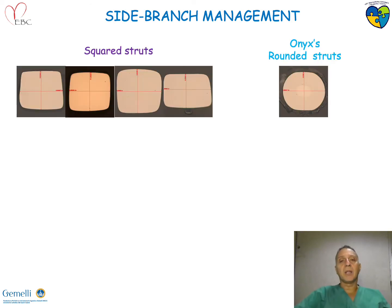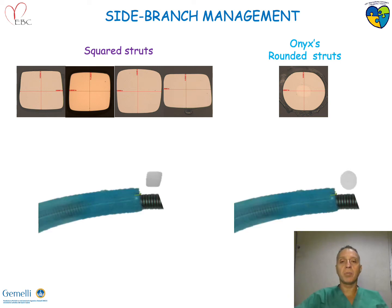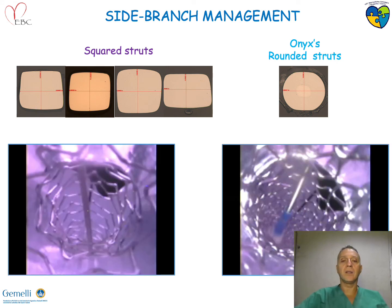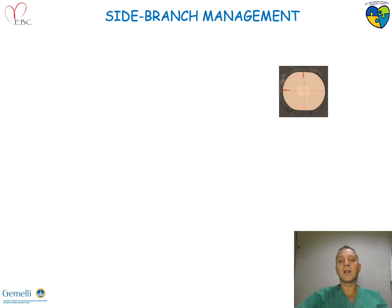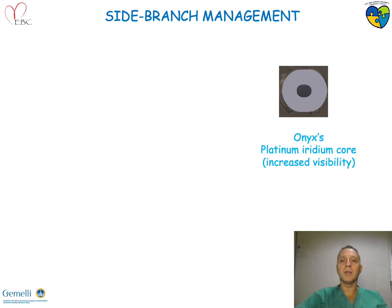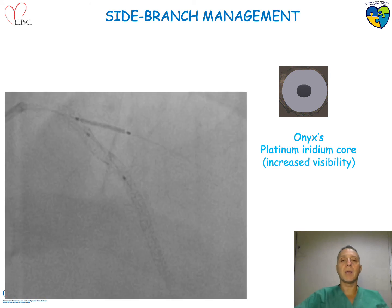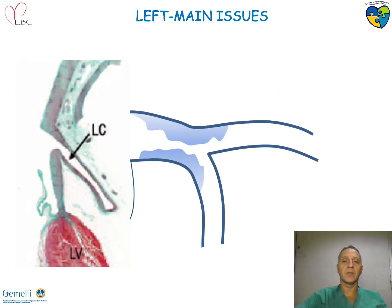Another aspect is the fact that a particularity of this stent is its round shape, and this may influence the crossing. This is a bench test showing how it is more easy to advance a balloon across the side branch when you have a round strut profile. Another aspect is the platinum iridium core, which may increase visibility — a very important point when we have to address a side branch.